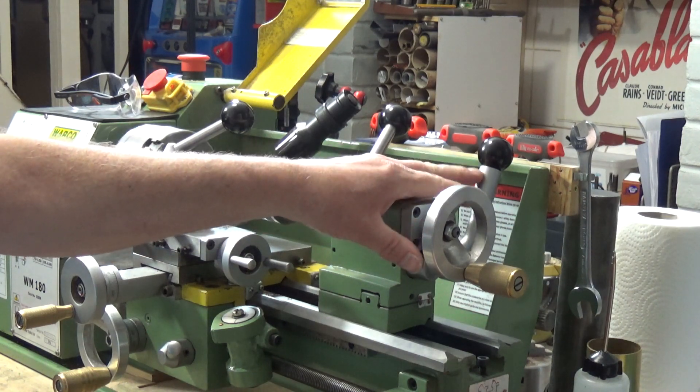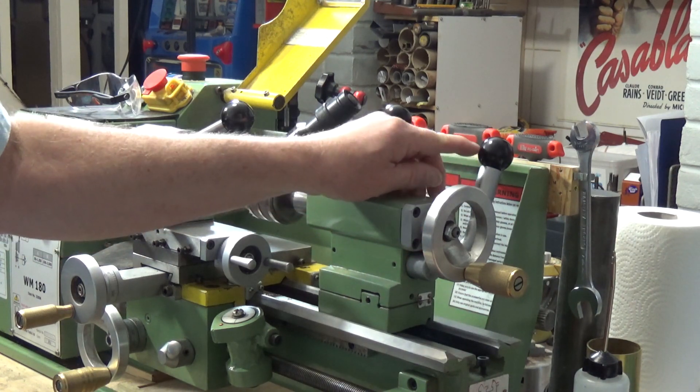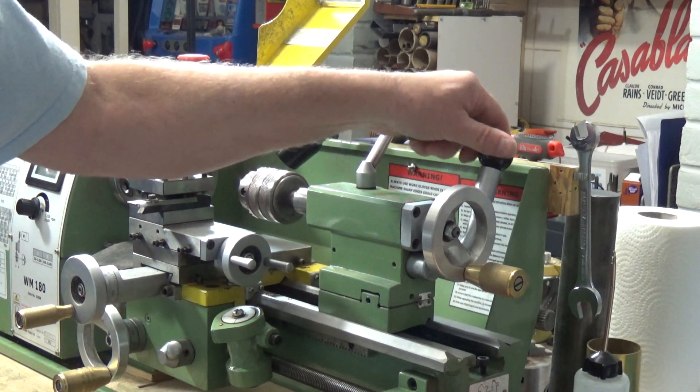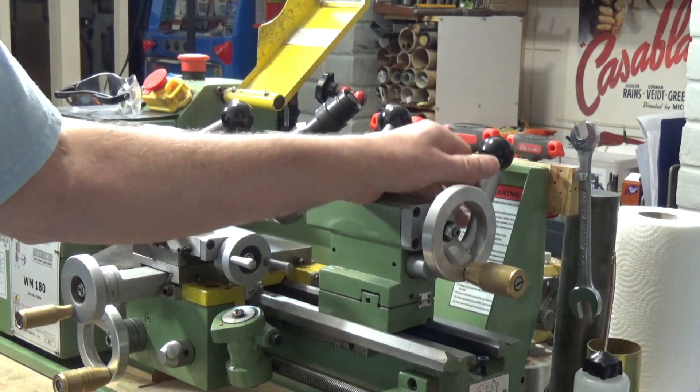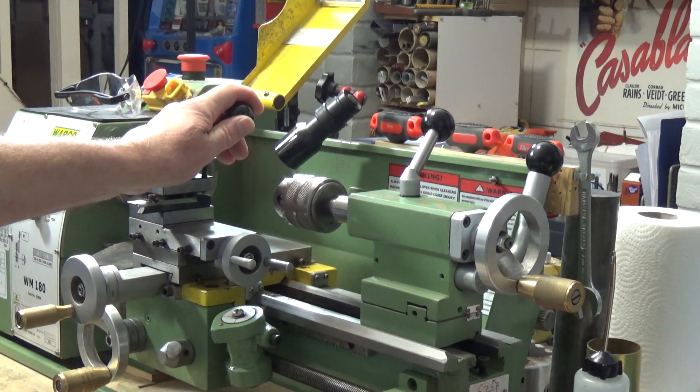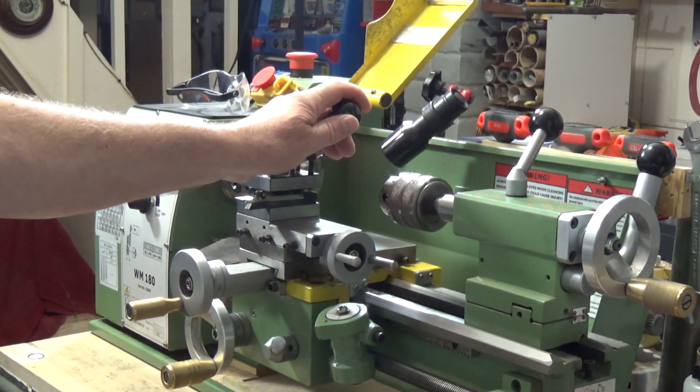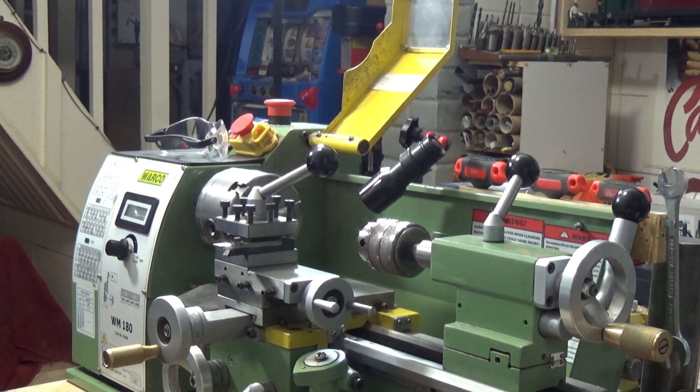I also added one to the tailstock lock lever. I simply drilled and tapped a 6mm hole in the top of the handle here and used a bit of 6mm studding to put a ball on the end and it just makes it easier to use. It's just a lot nicer to use and it's such a simple mod to do.